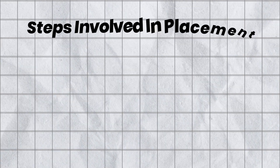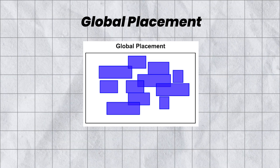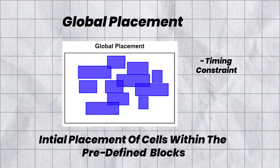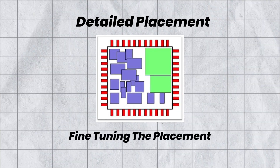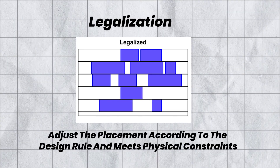Next is placement. In placement, we determine the exact location of individual blocks. The goal is to minimize wire length, reduce delay, and satisfy all the design rules. Steps involved are global placement, detailed placement, and legalization. Global placement is the initial placement of cells within predefined blocks while considering timing constraints and wire length minimization. Detailed placement is fine-tuning the placement by considering factors like congestion, timing, and power. Legalization adjusts the placement to ensure it adheres to design rules and meets physical constraints.